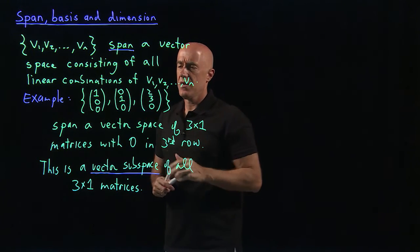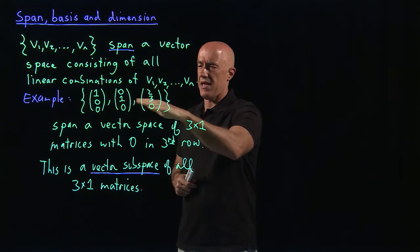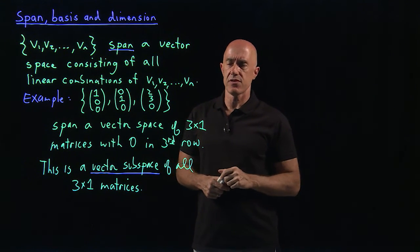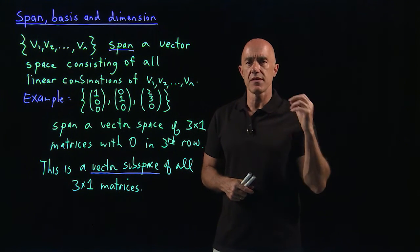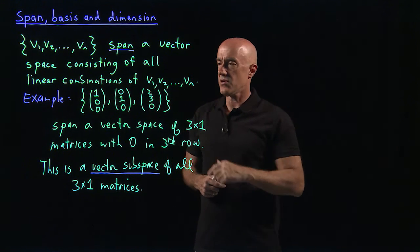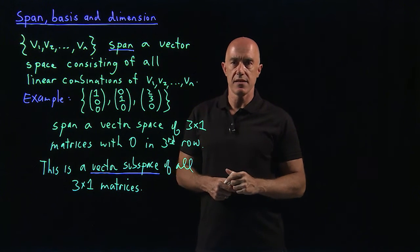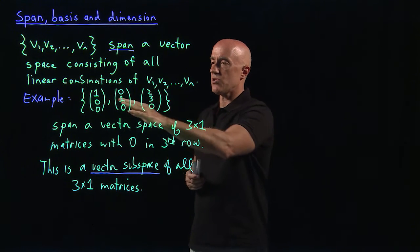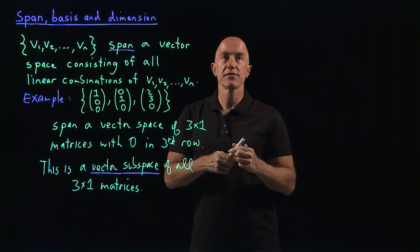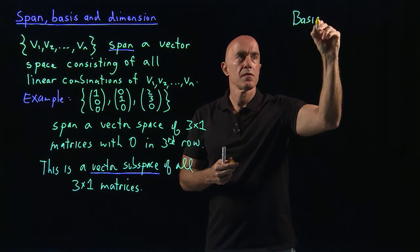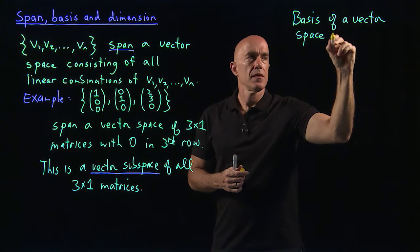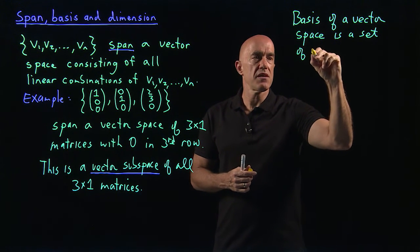If you look at these 3 vectors, you might ask: we're spanning a vector subspace that has 0 in the third row, but do we actually need all 3 vectors? No, because in the last video I showed you the third vector is a linear combination of the first two, so these 3 vectors are not linearly independent — they are linearly dependent. So in fact, we only need 2 of these vectors.